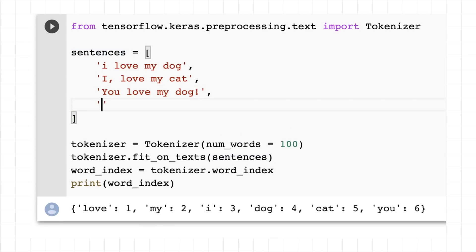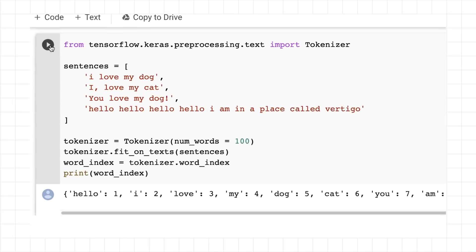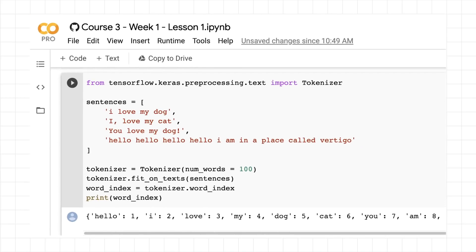For example, if I were to add another sentence here, like 'Hello, hello, hello, hello, I am in a place called Vertigo,' and then I were to run it, then we'd see 'hello' is now the top one because there are four of them, where there are three 'loves' and three 'mys.' 'I' also now shows up because there are three i's. So this is basically how the tokenizer works. Hopefully this will be useful for you. Have a play with this code, try some examples yourself, and see what you can come up with.